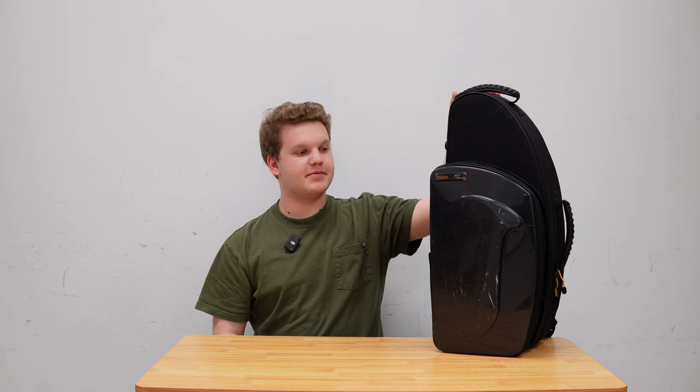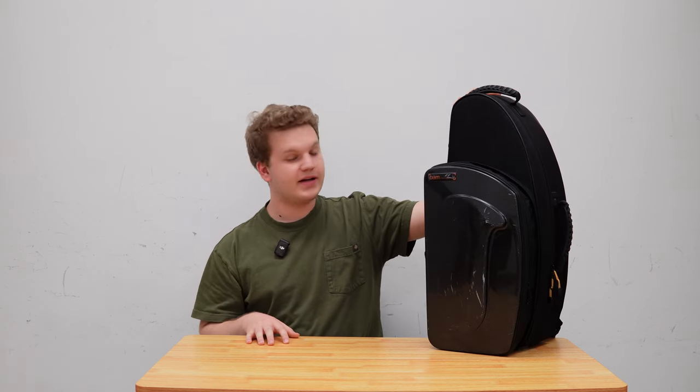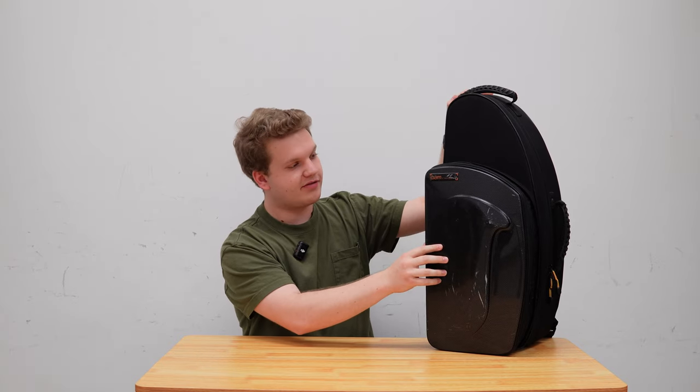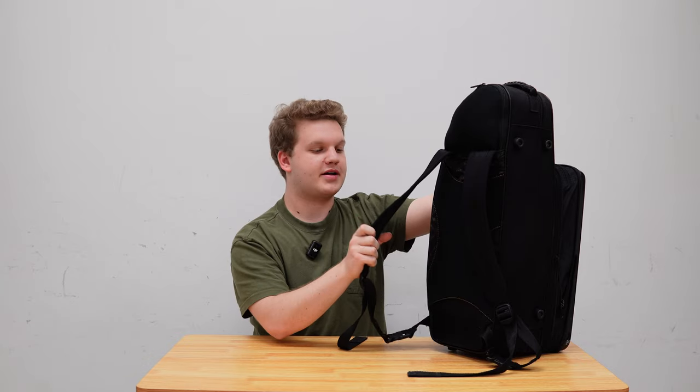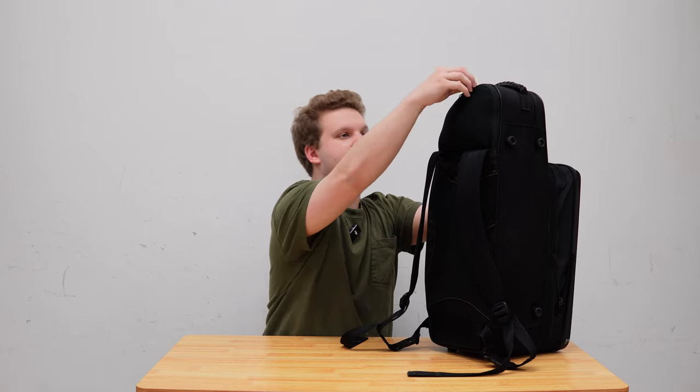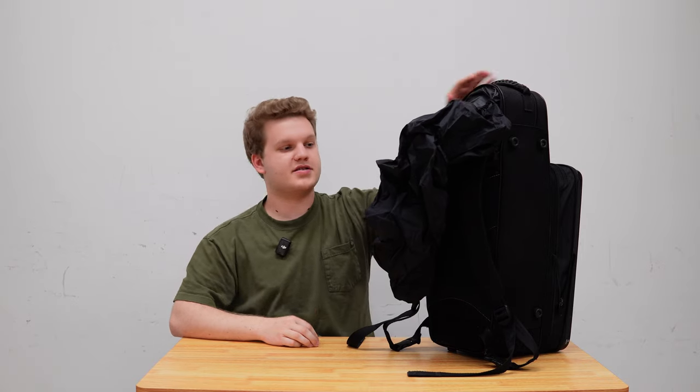So currently I use the BAM New Trekking Alto sax case. I got it for around $550 a couple years ago. It's held up pretty well. It has this hard shell in the front with a big zipper pocket. It has two really well-made backpack straps on the back that are fairly comfortable and then it also includes this pouch that unzips and has a rain poncho for the case.